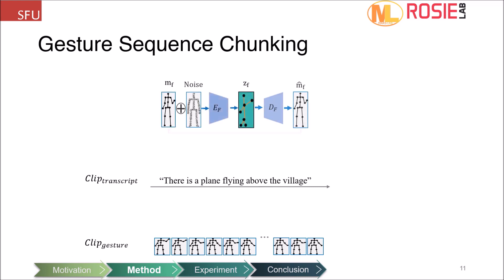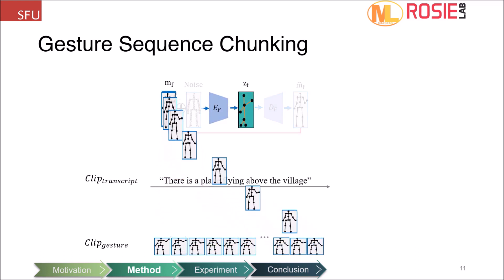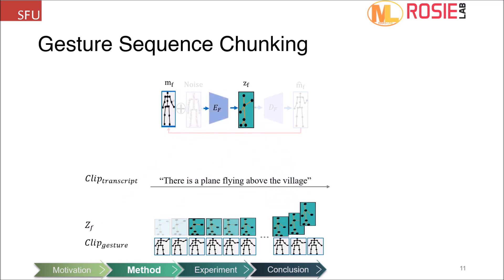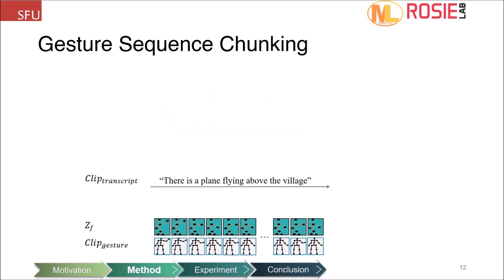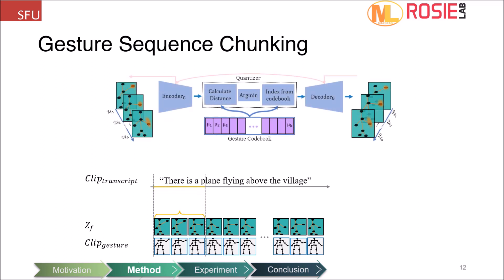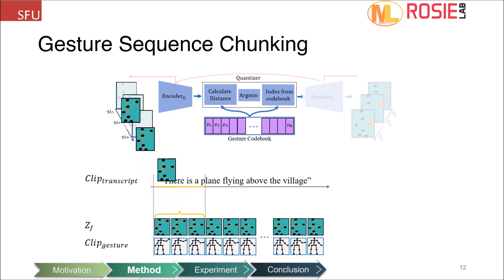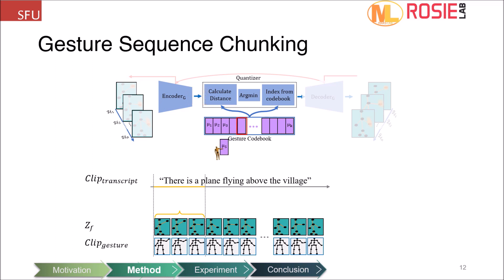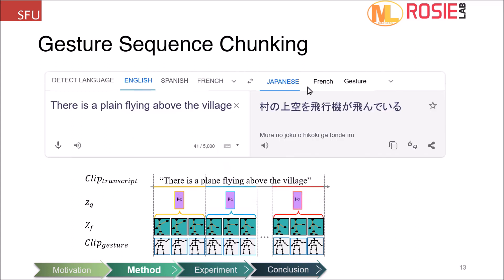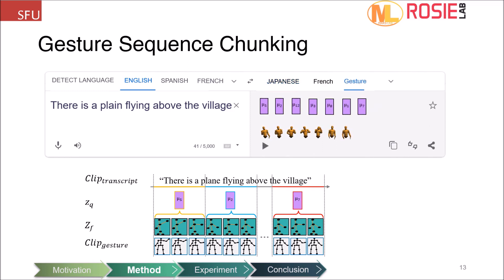First, we use the DAE's encoder to map each frame to a pose-latent representation ZF. At this stage, we do not use the DAE's decoder. Then we chunk ZFs into a set of N frames and feed the chunk to the trained VQVAE's encoder and quantizer layer to cluster the gesture sequence to the nearest neighbor token in the codebook. We do the same for the rest of the sequence. Eventually, we generate paired samples of text and gesture tokens appropriate for training a machine translation model.